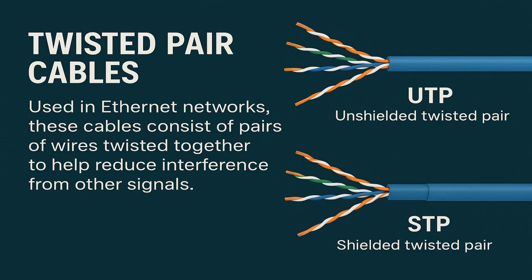First up, twisted pair cables. These are the most common and are used in ethernet networks. Inside the cable are pairs of wires twisted together — hence the name. The twists help reduce interference from other signals. There are two types: unshielded (UTP) and shielded (STP). UTP is cheaper and widely used in homes and offices, while STP adds extra protection for environments with a lot of electrical noise. These cables are easy to install, flexible, and support speeds up to 10 Gbps over short distances.